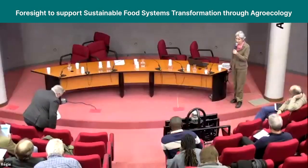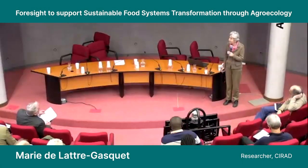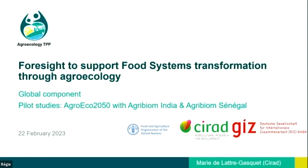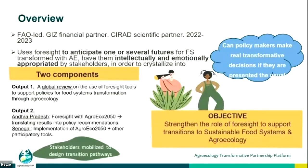Thank you for inviting us. As an aligned project we just joined — it's a foresight project to support food system transformation through agroecology. It has three components: one is a global component which I will focus on, and there are two pilot studies, one in India and one in Senegal. It's a FAO-led project with German funding, and CIHEAM is the scientific partner. It started in 2022 and will go on into 2023.